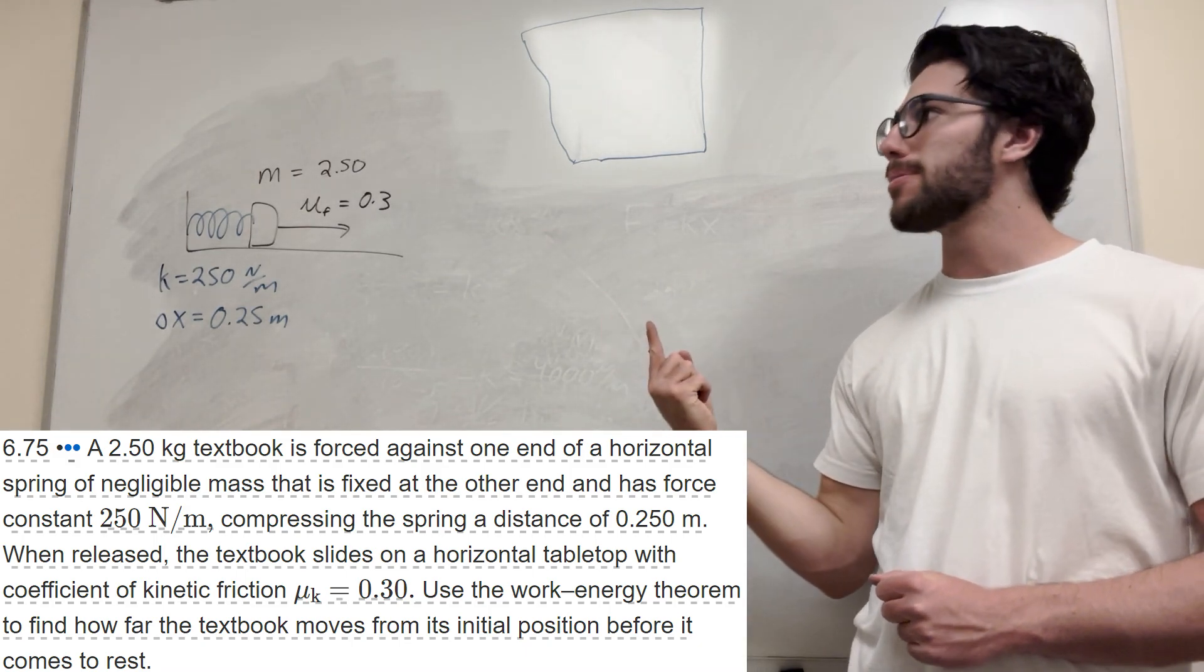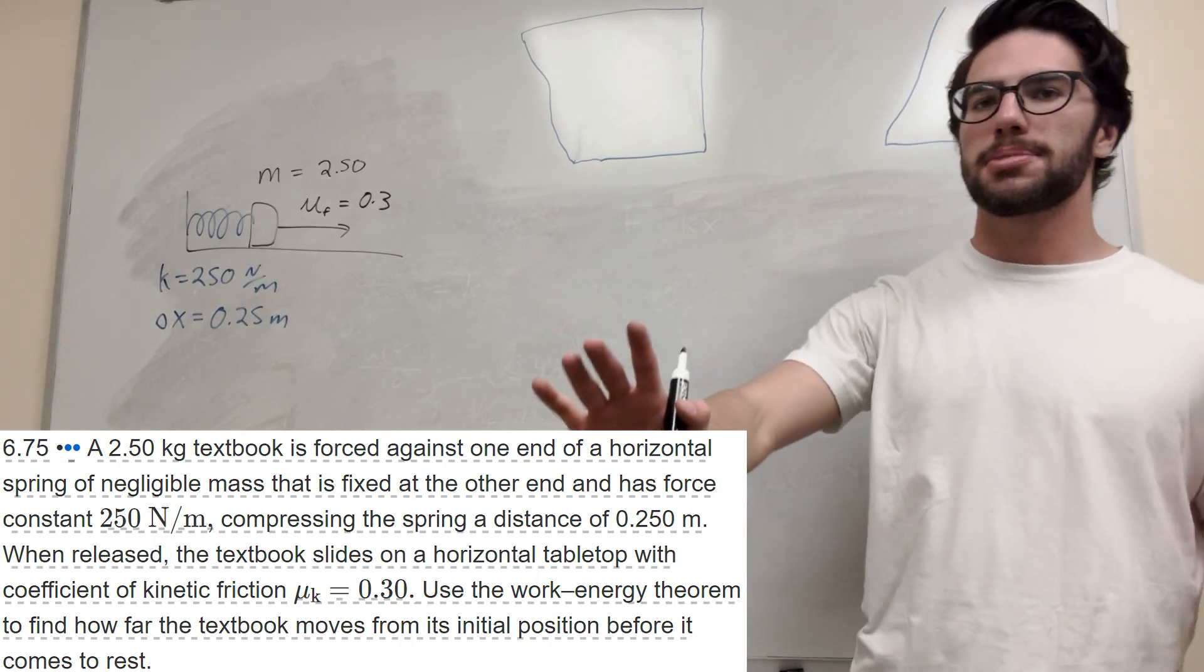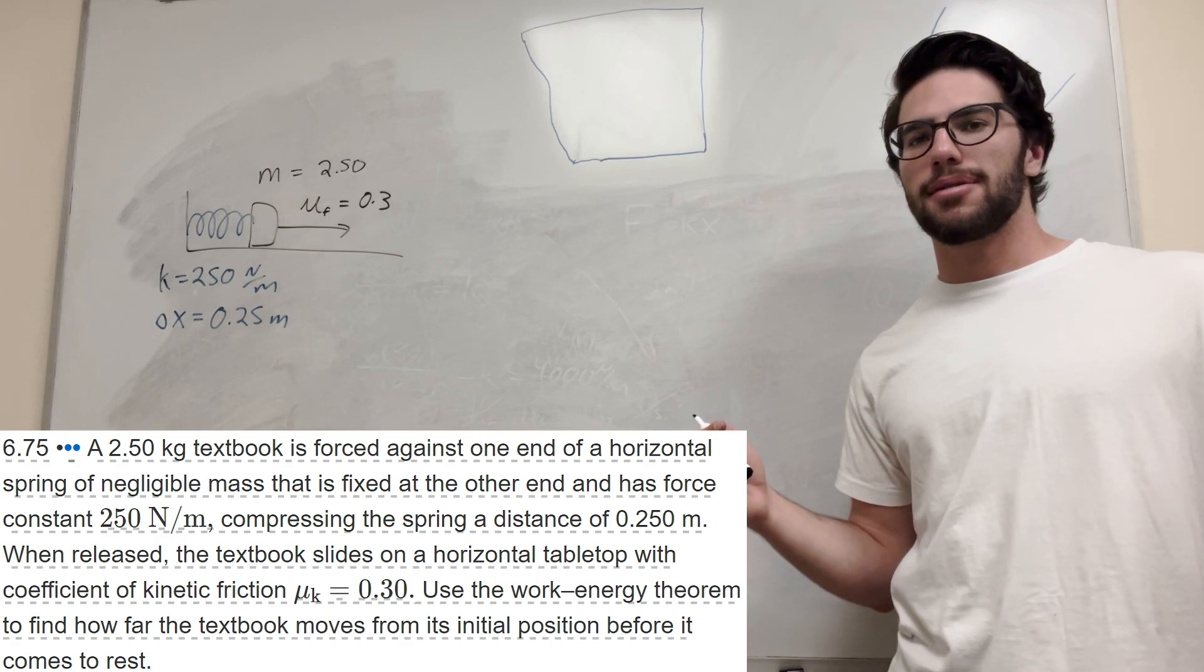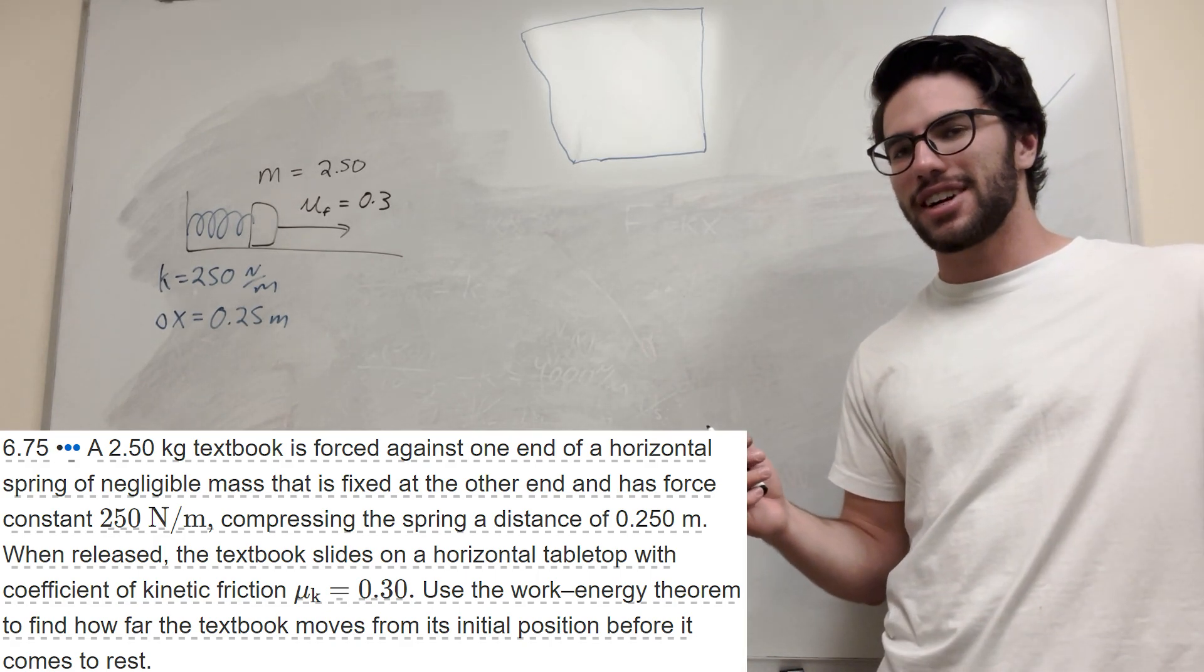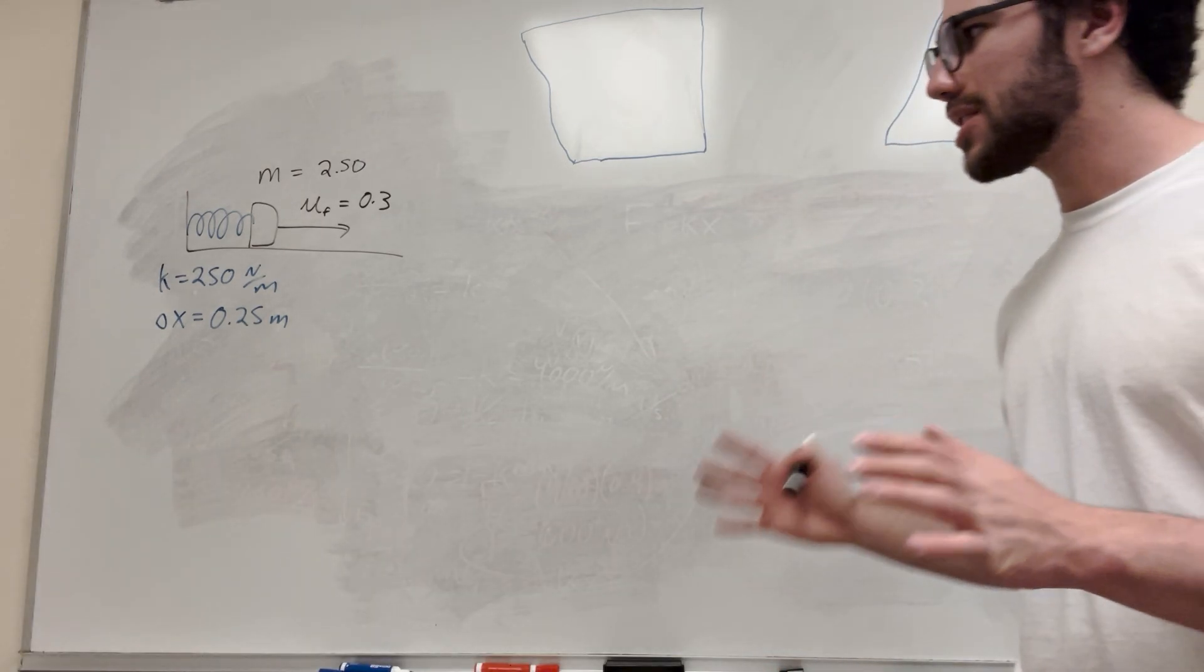What's up, Cal gang? Alright, so we got this problem on our board, basically this textbook, and we're pushing it against the spring, and then we're gonna let it go, and it's gonna have this friction, so it's gonna get blasted off at a certain speed, and then this friction is gonna slow it down. We're trying to find how far does it go in that distance. So let's do that.